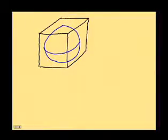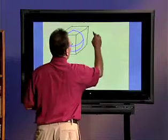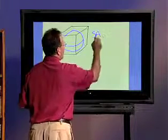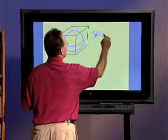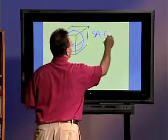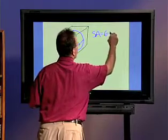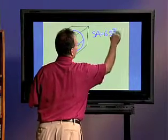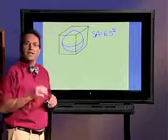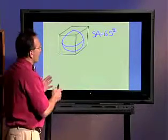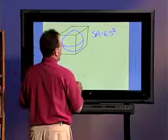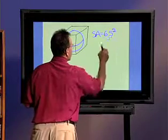We know the surface area of the cube is equal to, well there are six sides to that, so it's six times s squared. What we want to do though is we want to look at what is the length of one of the sides of the cube, in other words the little s.